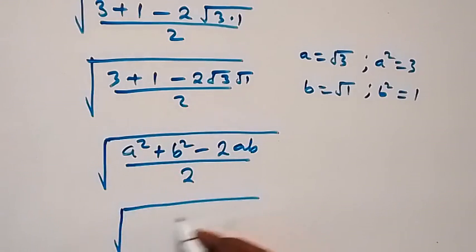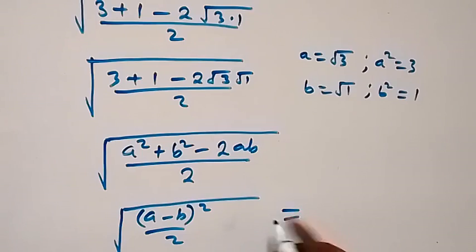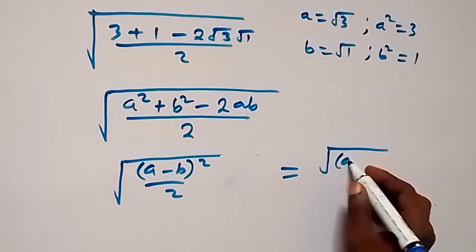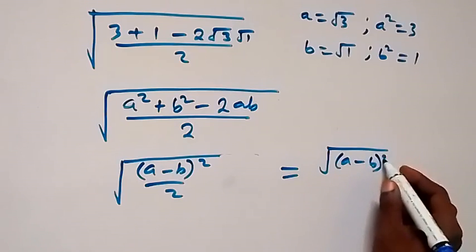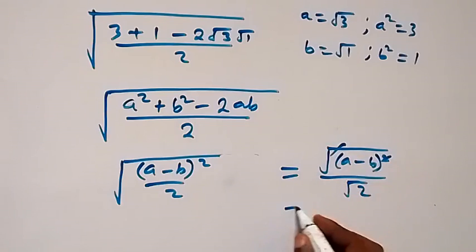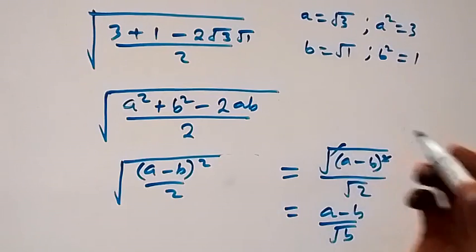Then from what we have, that this will now be equal to square root of a minus b r squared over 2. Then we can separate this into two roots, and whereby we have root into bracket a minus b squared, then over root 2. Then square cancel square root. This is the same thing as a minus b over root 2. And recall that a is equal to root 3 and b is equal to root 1.